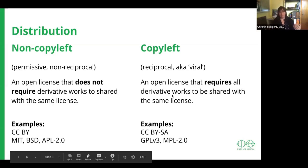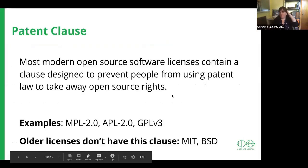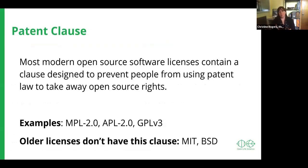Moving on to patent clauses: most modern open source software licenses contain a clause designed to prevent people from using patent law to take away open source rights. That's called patent snapback, and it means that the patent rights revert by default to the person who released it. Examples of this are MPL, APL, and GPL v3. Sometimes this isn't applicable in older licenses like MIT and BSD, but that likely won't be a concern for people applying licenses in this program.